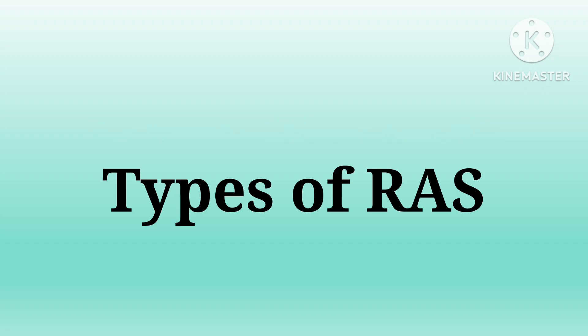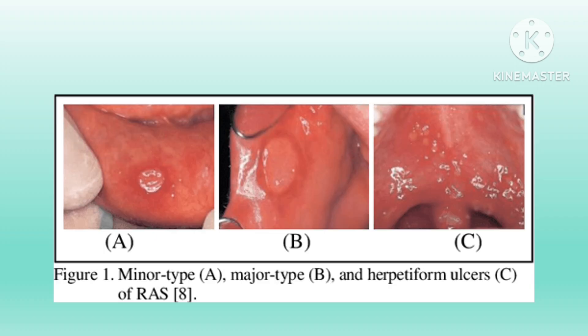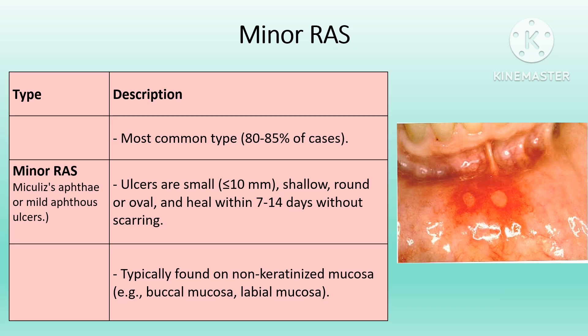Recurrent aphthous stomatitis (RAS) is characterized by persistent painful oral ulcers lasting days to months. There are three distinct forms classified by ulcer size, number of ulcers present at one time, time to resolve, and presence of scarring after healing. The three subgroups are: minor aphthous ulcers, major aphthous ulcers, and herpetiform aphthous ulcers. Minor aphthous ulcers are usually under 1 cm, have a fibrinous base with a red inflammatory halo, occur on non-keratinized mucosa in crops of 1–6, and heal within 10 days without scarring.